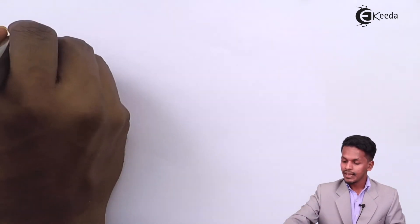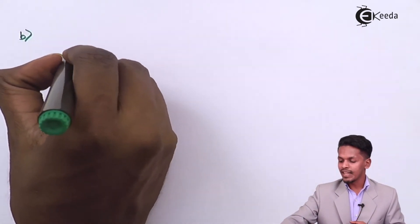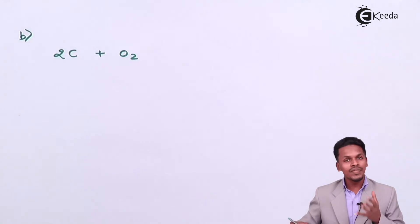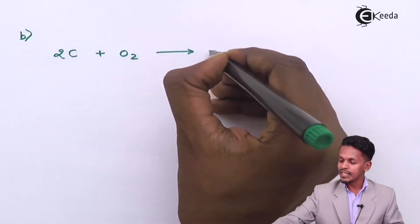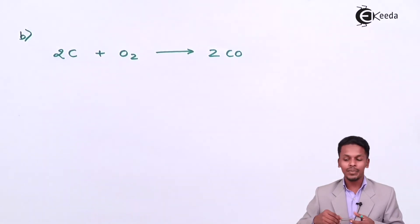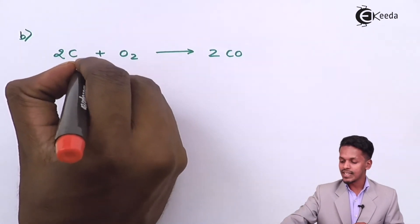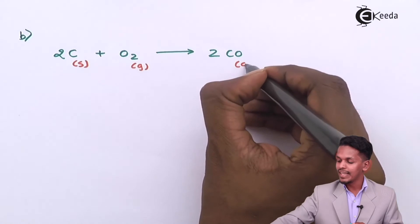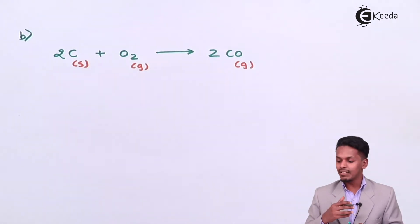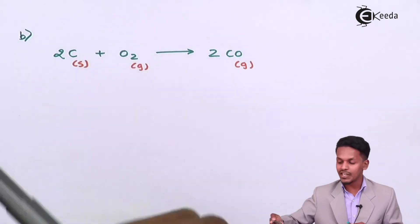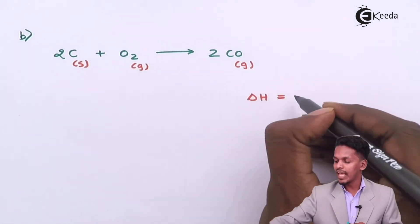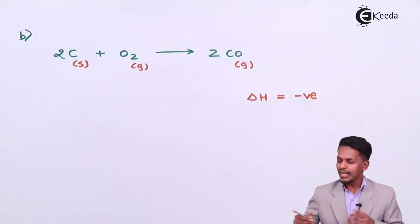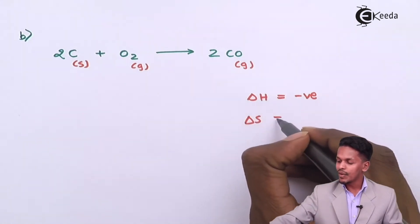The second condition: if carbon is reacted with a limited supply of oxygen, the balanced reaction is 2C(s) + O₂(g) → 2CO(g). Carbon is in solid phase, oxygen is gaseous, and carbon monoxide is also gaseous. This is a combustion reaction, so delta H has a negative value, indicating an exothermic reaction. However, in this case delta S is positive.